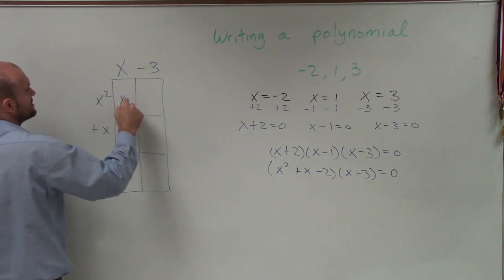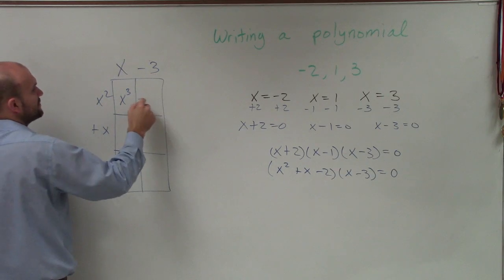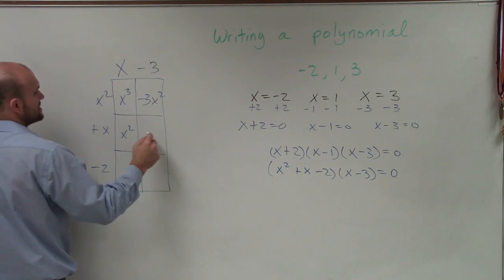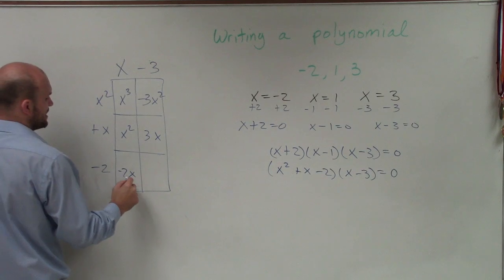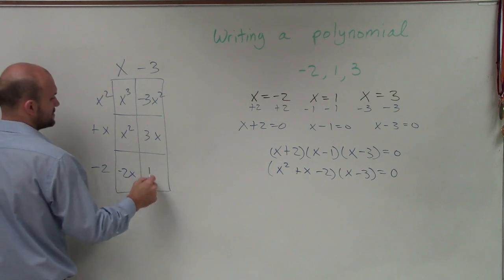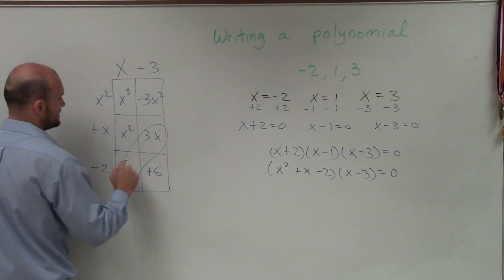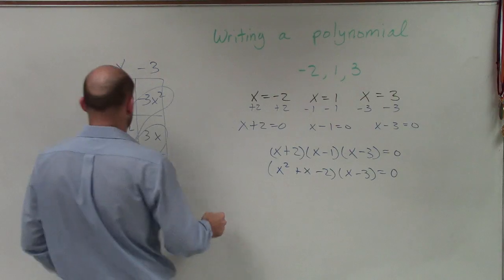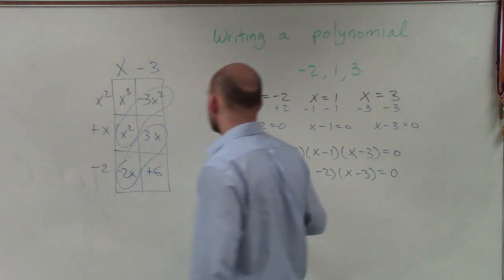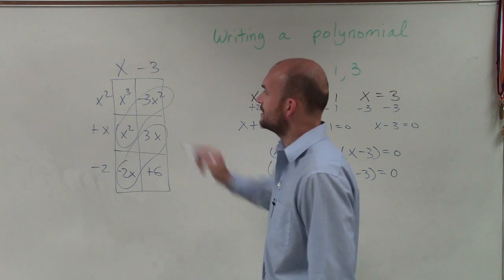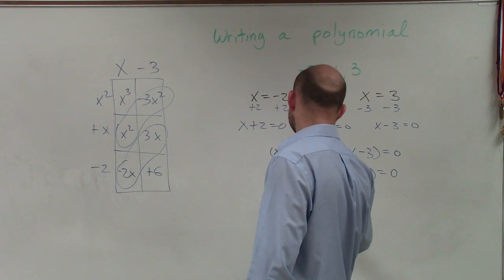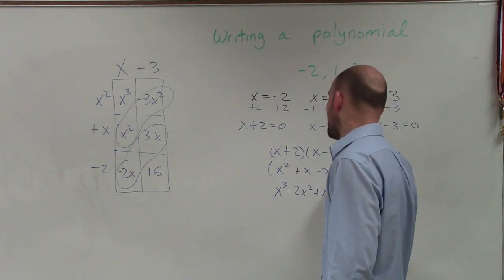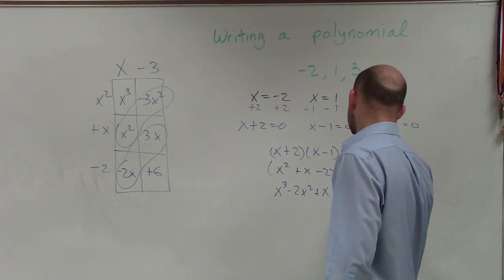x times x is x cubed. x squared times negative 3 is negative 3x squared. x times x is x squared. Negative 3 times x is negative 3x. x times negative 2 is negative 2x. Negative 3 times negative 2 is positive 6. I combine the x squared terms and the x terms, giving me x cubed, negative 3x squared plus x squared is negative 2x squared, and 3x minus 2x is positive x, plus 6, equals 0.